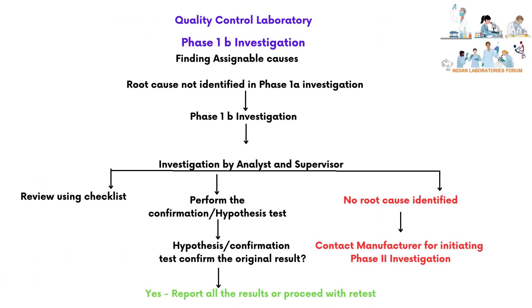Phase 1b investigation will be done to find out the assignable cause, and will be performed by the analyst and supervisor of the laboratory. The laboratory supervisor should review the test data using a predefined checklist and perform the confirmation or hypothesis test based on the probable root cause. If the hypothesis or confirmation test confirms the original result, report all the results or proceed with retest. If no root cause is identified in Phase 1b, proceed with Phase 2 investigation.